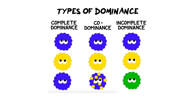There are three kinds of dominance that we are going to cover today. They are complete, co, and incomplete dominance. This picture really sums it up in a very basic way, but I'm going to run you through the laws and the letters that you should be using when you complete your genetic crosses.